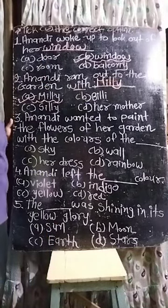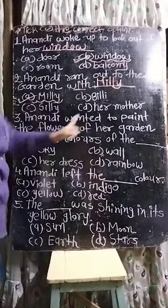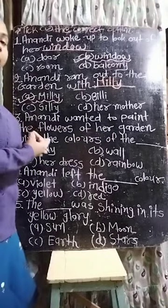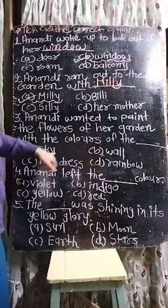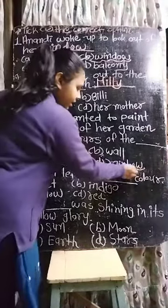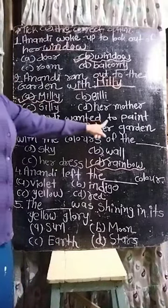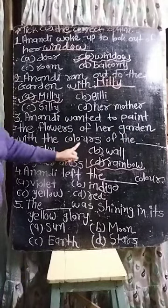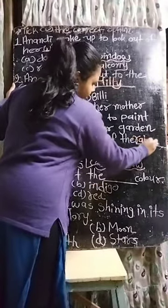Third one: Anandi wanted to paint the flowers of her garden with the colors of — kaunse color se uske garden ke flowers ko paint karna chahti thi? Sky, wall, her dress, or rainbow? The answer is rainbow. Anandi wanted to paint the flowers of her garden with the colors of the rainbow. Write down: rainbow.